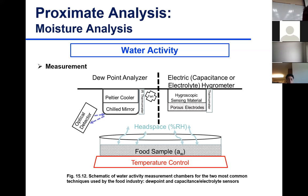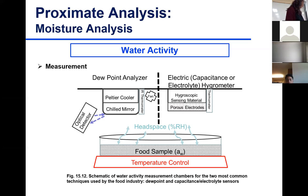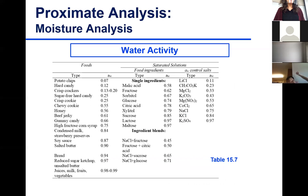In the electric hygrometer, you have a hygroscopic substance that either loses or gains moisture based on the relative humidity of the environment. Any change in conductivity detected at the electrodes — due to changes in absorption by the hygroscopic material — is measured. Changes in conductivity or capacitance give you the water activity reading.